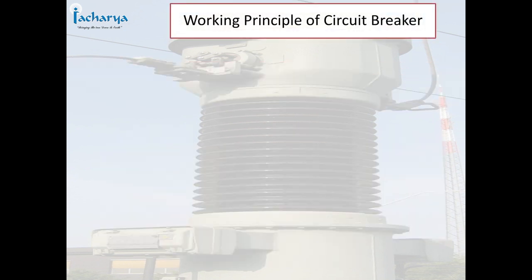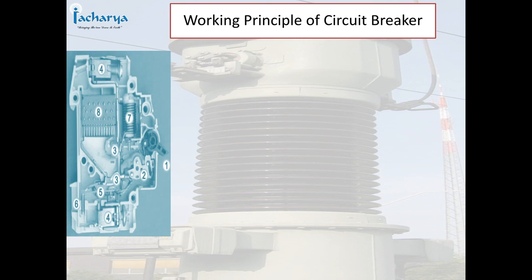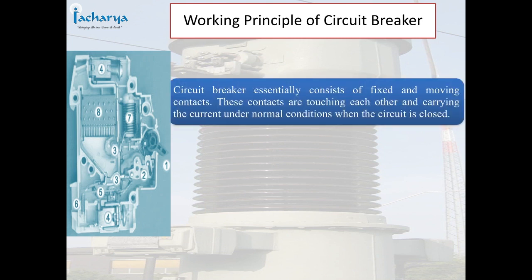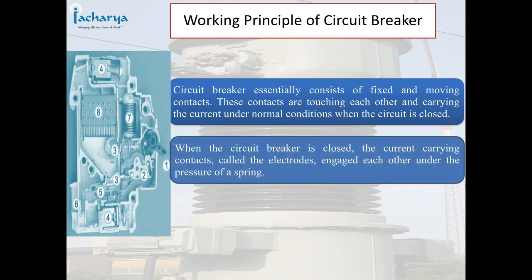A circuit breaker essentially consists of fixed and moving contacts. These contacts touch each other and carry the current under normal conditions when the circuit is closed. When the circuit breaker is closed, the current-carrying contacts, called the electrodes, engage each other under the pressure of a spring.